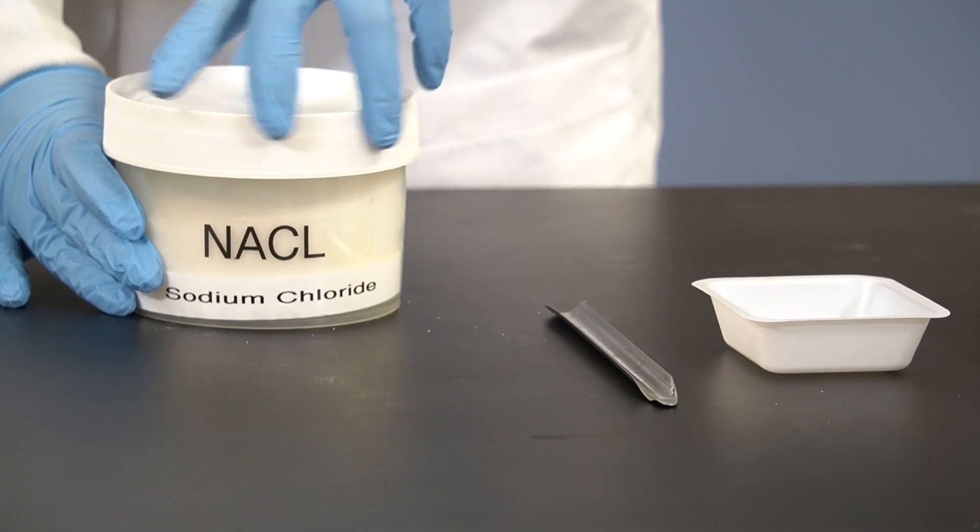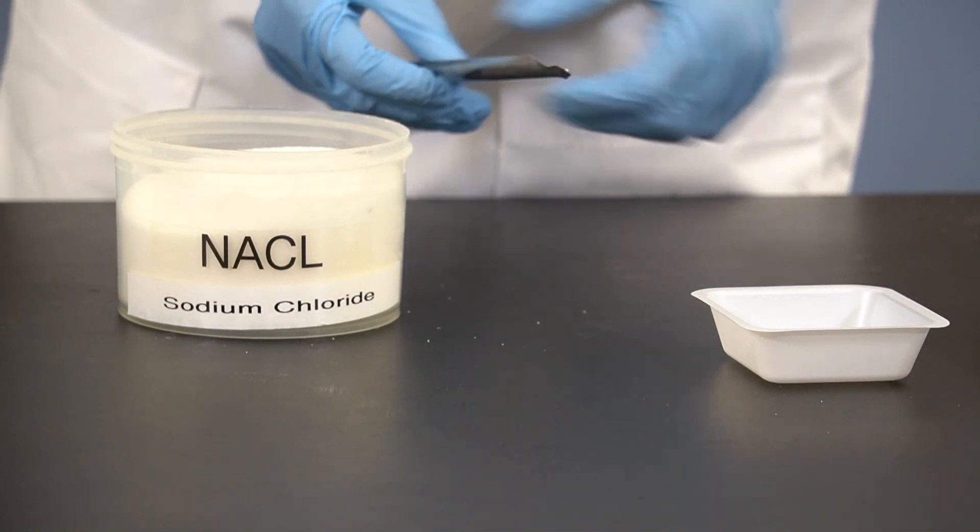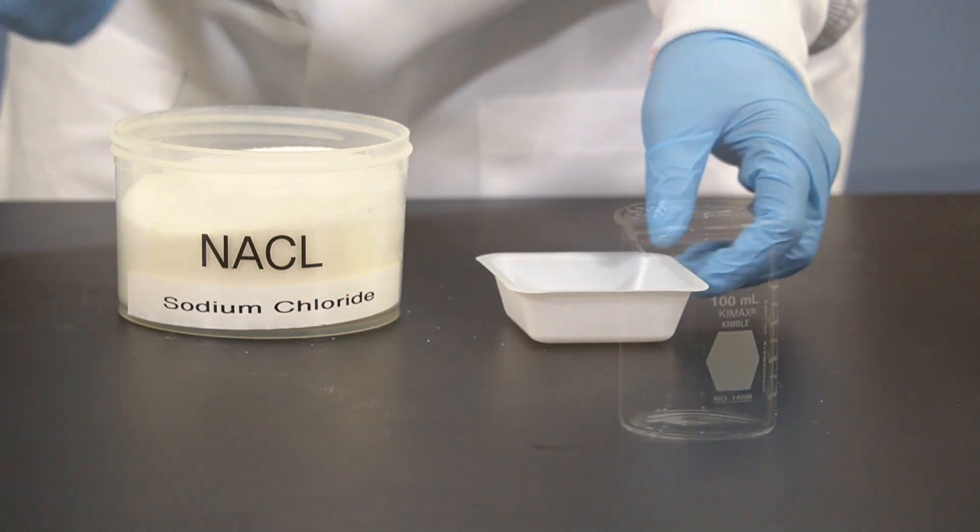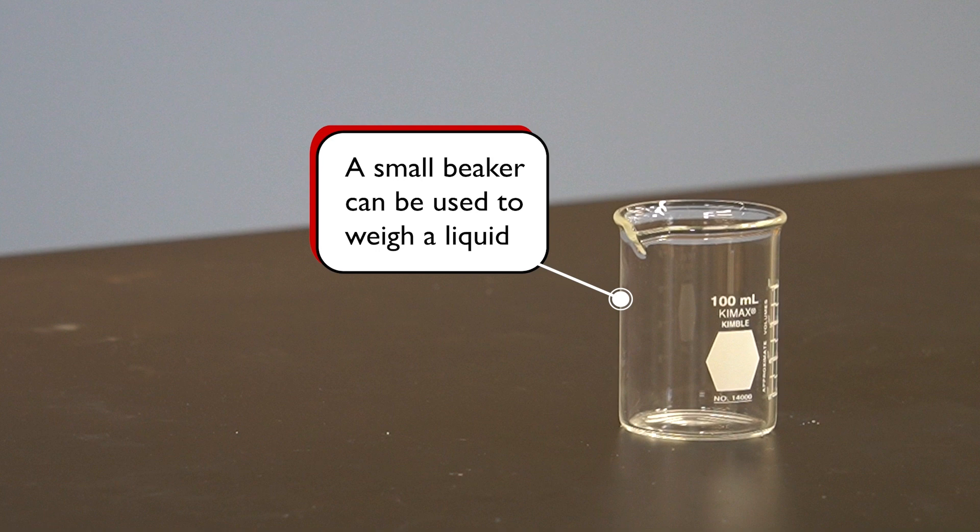As sodium chloride is a solid substance, a weighing boat is our best choice, because we want the receiving vessel to be as lightweight as possible. We only use a small beaker when we are weighing a liquid and have no other option.